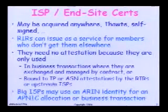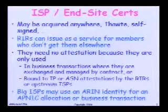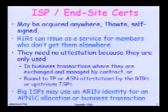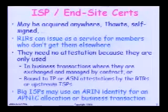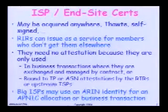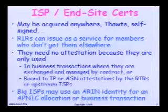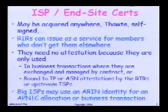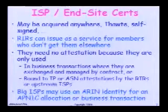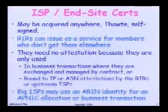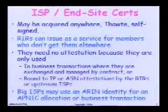But when I join the RIR, if I have my own certificate, the certificate is bound to me because I hand it to them when I sign the contract. That's my identity, and that's all they need. No further attestation of the certificate is needed because it's only used two ways: the business transaction — so they're exchanged and managed by contract — or they're bound to an IP or ASN allocation by the attestation of the RIR binding to the contractual thing. They are identity certs. They don't need a hierarchy, they don't need a certificate authority chain.